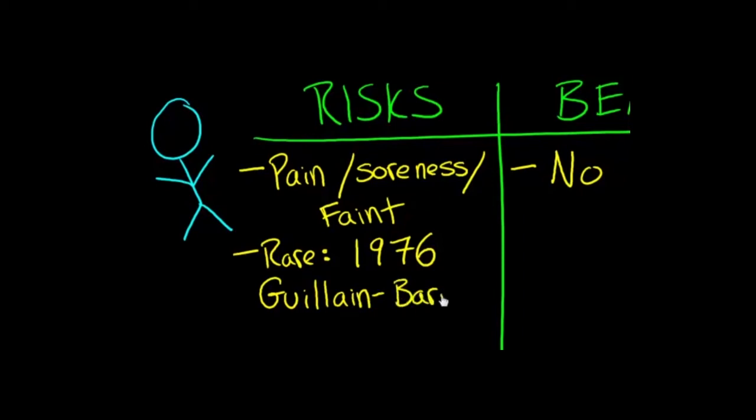And Guillain-Barre syndrome is a nerve problem that leads to muscle weakness. And although there was never any proof that the flu vaccine actually caused Guillain-Barre, since 1976, we've been screening for this condition to make sure that it doesn't lead to severe complications.